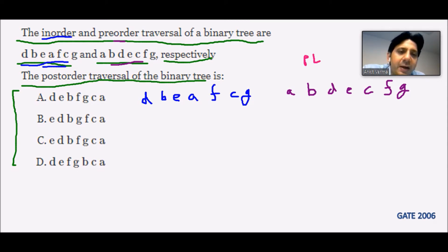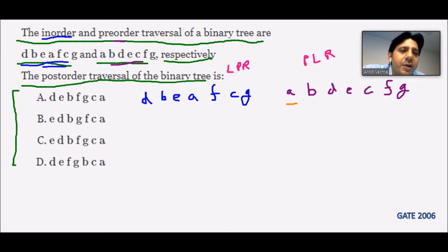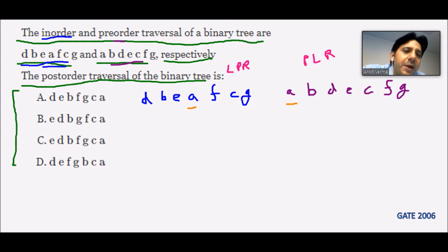In pre-order, we have the parent first, then left, then right subtree. In in-order, we have the left child, then parent, then right child. Since A is first in the pre-order, A is the root of the complete tree. So I will locate A inside the in-order.